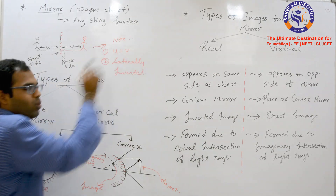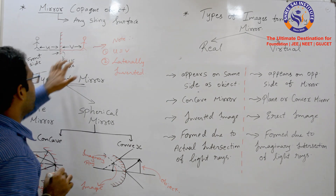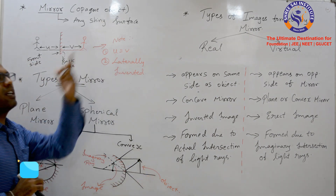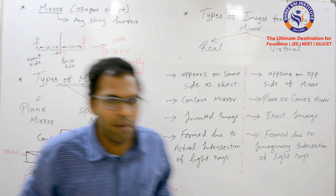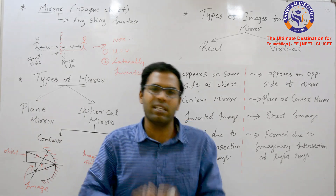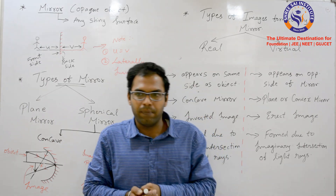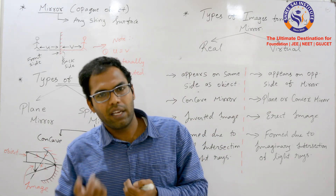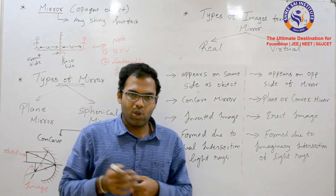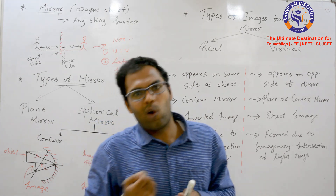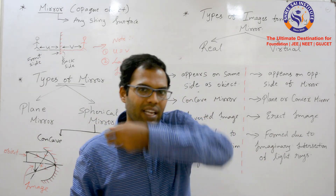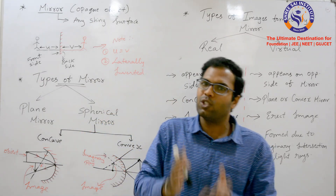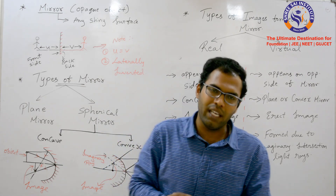The first property of a plane mirror is u equals v — the object distance equals the image distance. The second property is that it forms a laterally inverted image. You can see this in daily life — for example, when we comb our hair in front of a mirror, the visible region appears on the left side, meaning the image is laterally inverted.